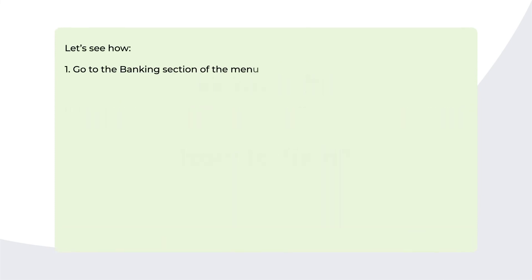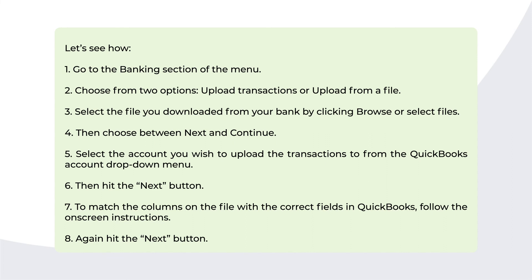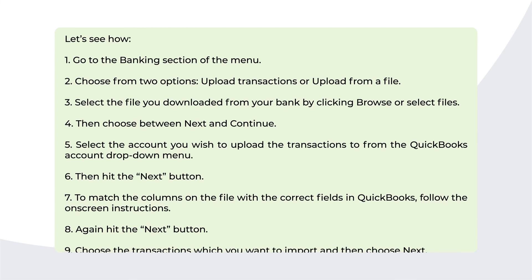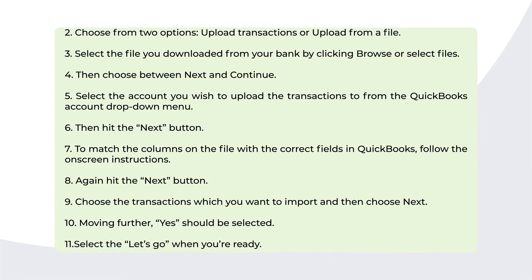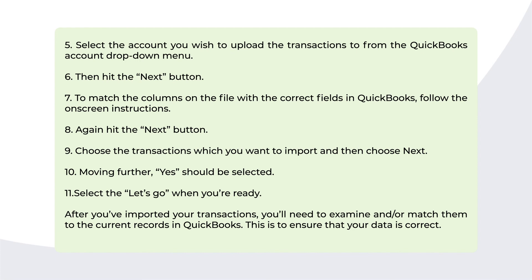How to fix it: Go to the Banking section of the menu and choose to either upload transactions or upload from a file. Select the file downloaded from your bank by clicking Browse or Select Files, then choose Next or Continue. Select the account to upload transactions to from the QuickBooks account drop-down menu. Follow the on-screen instructions to match columns with the correct fields in QuickBooks. Choose the transactions you want to import, select Next, then select Yes. When ready, select Let's Go. After importing, examine and match the transactions to current records in QuickBooks to ensure your data is correct.